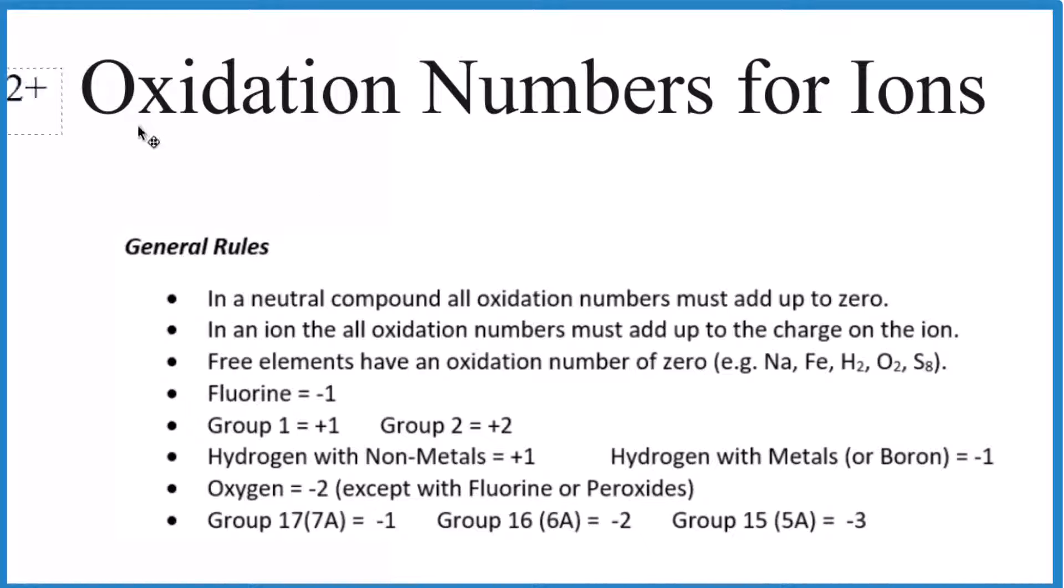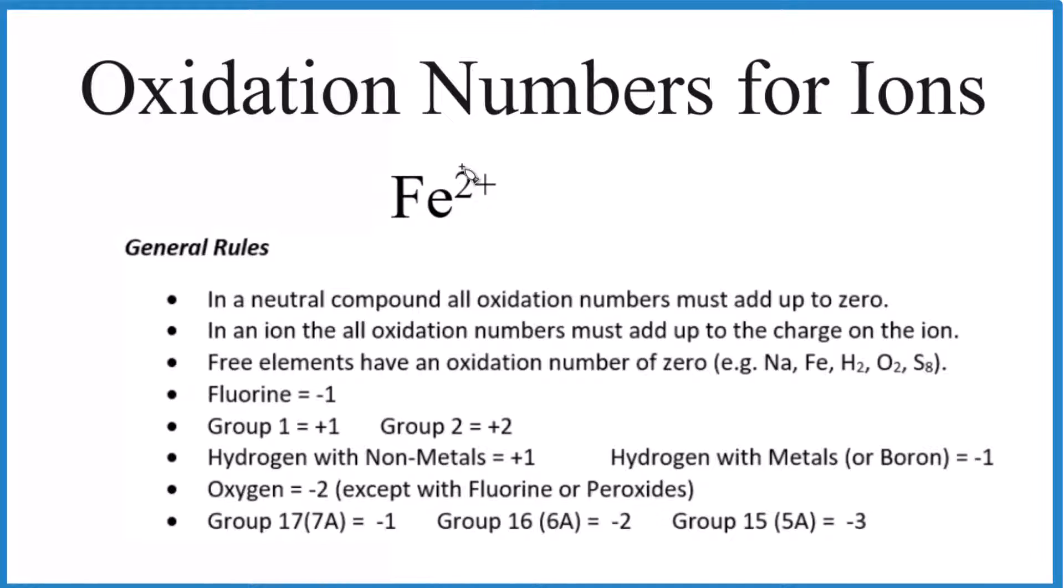So if you have monatomic ions, where you just have the one atom here, the charge, the 2+, that's equal to the oxidation number. So you can see for oxidation, the plus goes in front of the 2. For charge, it goes after the 2.